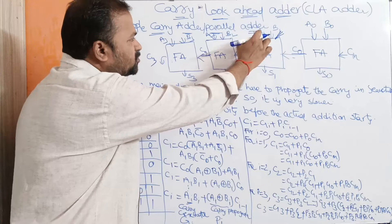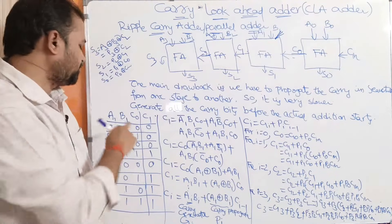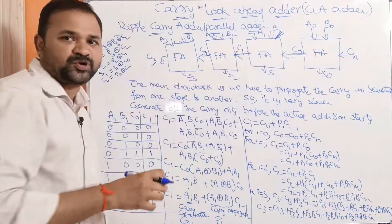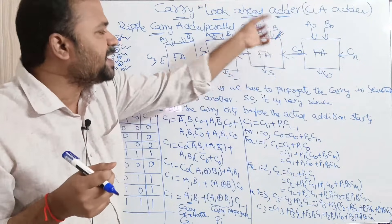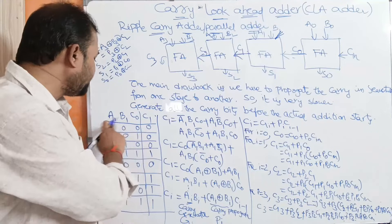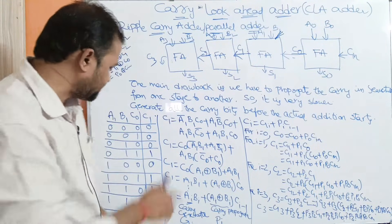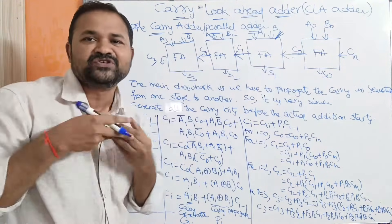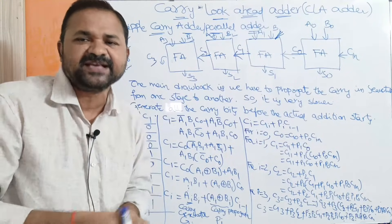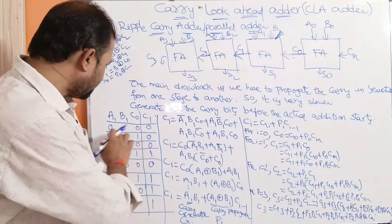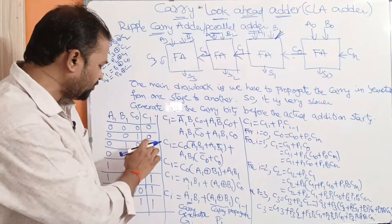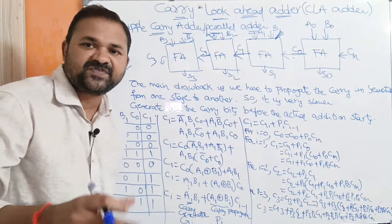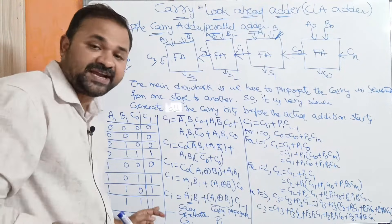For the second full adder the inputs are A1, B1, and C0, and it produces C1 as the output. To calculate the carry we use the truth table of the full adder. There are 2³ = 8 combinations, and all eight combinations are written down. We are calculating only the carry output here; we need not worry about S1. From the truth table: 0+0+0 gives carry 0; 1+1+0 gives sum 0 with carry 1; all three 1s gives carry 1.